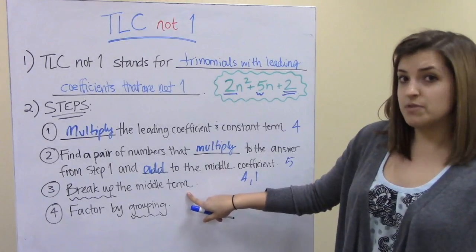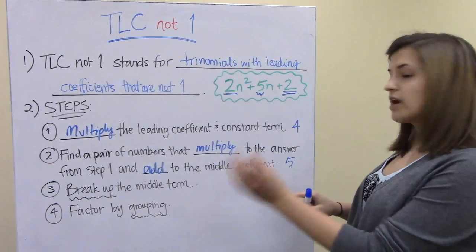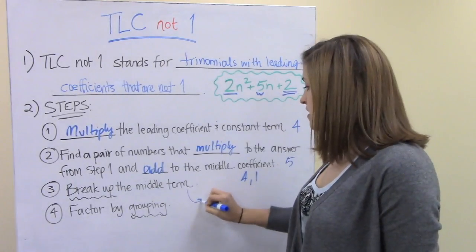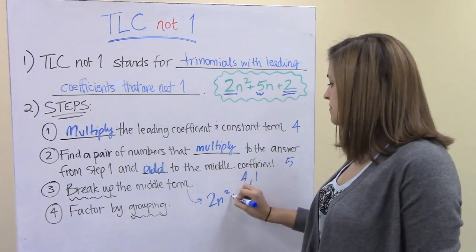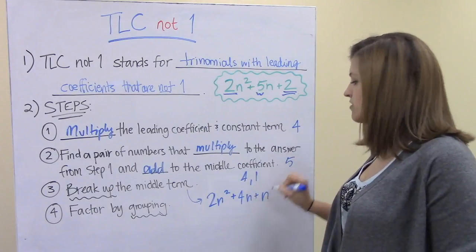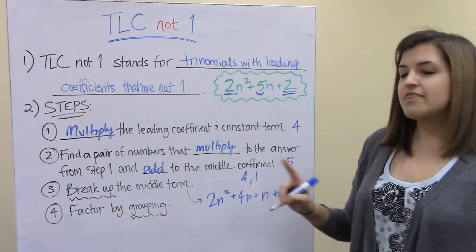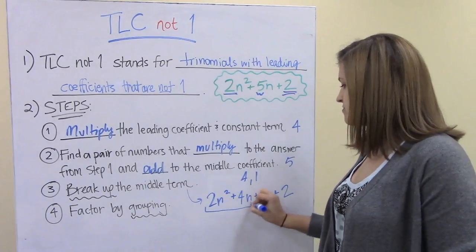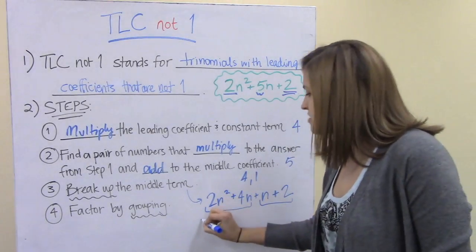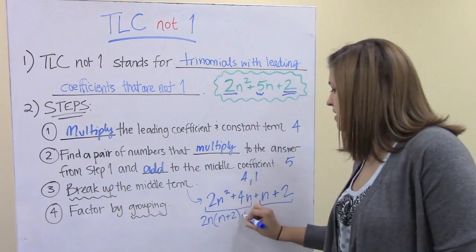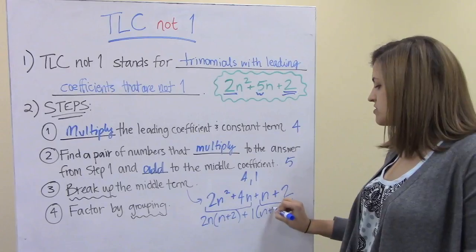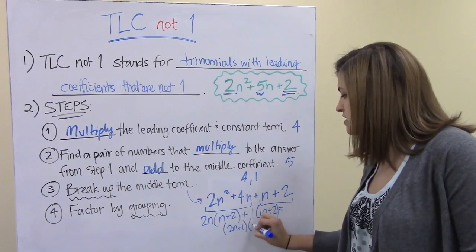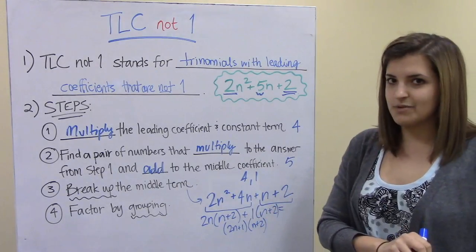Then we need to break up the middle term. The middle term 5n breaks into 4n + 1n, so we have 2n² + 4n + n + 2. Now we factor by grouping: group the first two terms and the last two terms to get 2n(n + 2) + 1(n + 2), which factors into (2n + 1)(n + 2). And that is how we solve these types of problems.